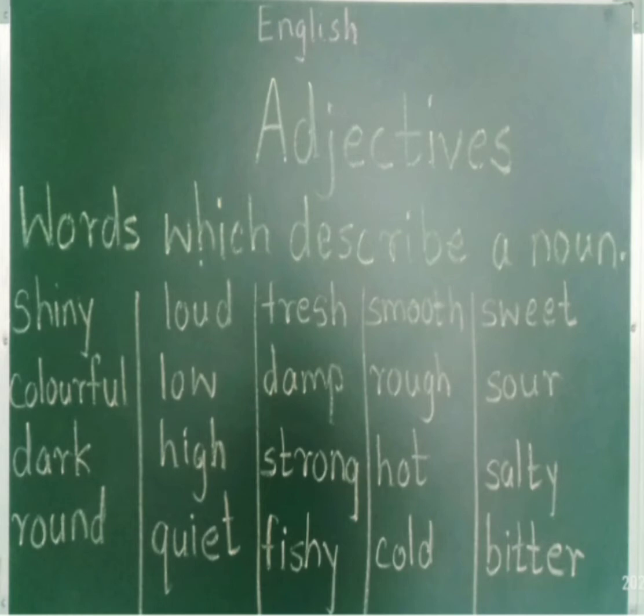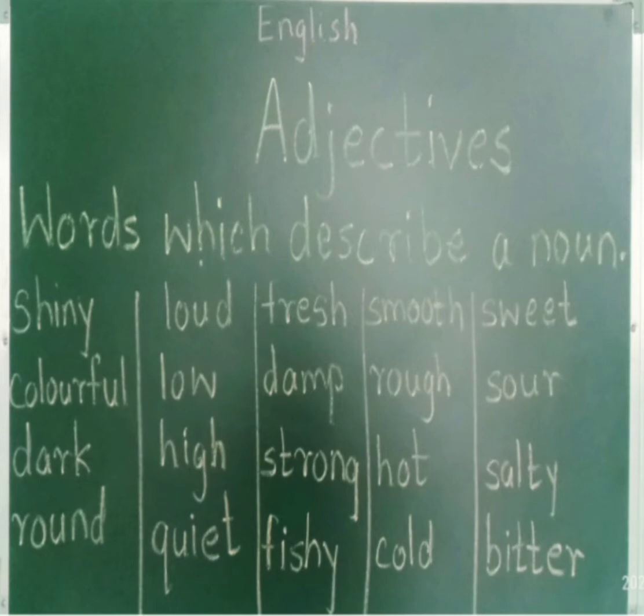In that, we have seen different examples of person, place, animals, and things. In our second session, we have seen about pronoun. A pronoun is a word used instead of a noun. In that, we have studied about subjective pronoun and objective pronoun. I hope you have learnt subjective pronoun and objective pronouns. Now, in today's session, we are going to see about adjectives.